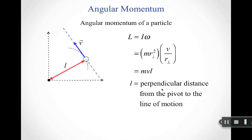We've set this up for a rigid rotator, but what about a single particle? We can calculate the angular momentum of a particle using L = Iω, plugging in the moment of inertia and angular velocity for a single particle. This gives the expression that the angular momentum of a particle equals mass times velocity times the perpendicular distance from the pivot to the line of motion.